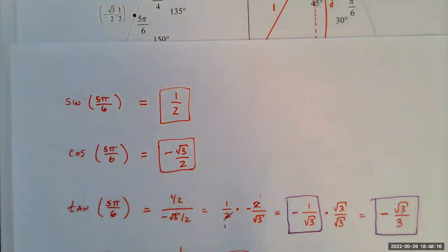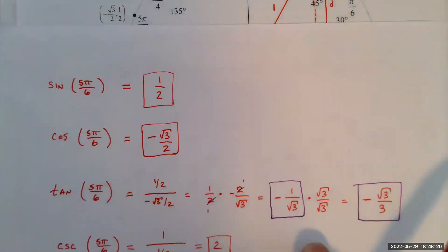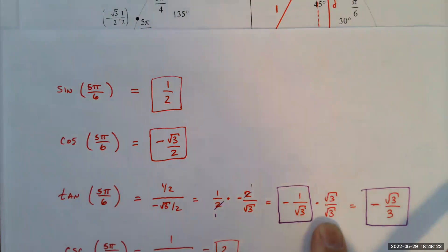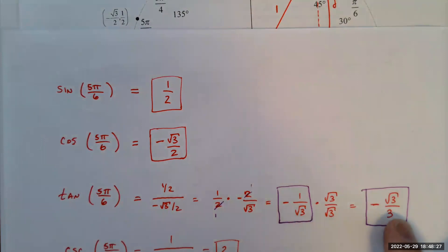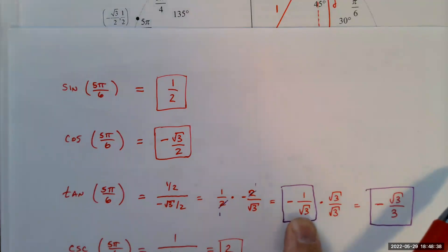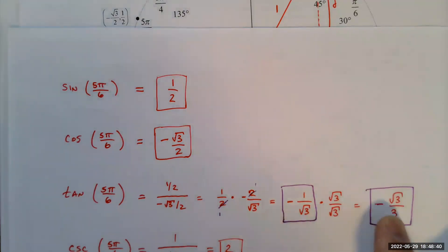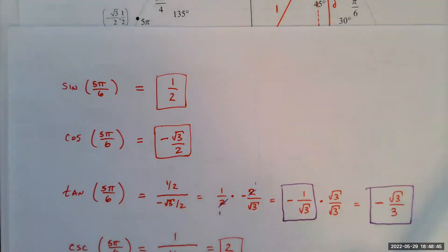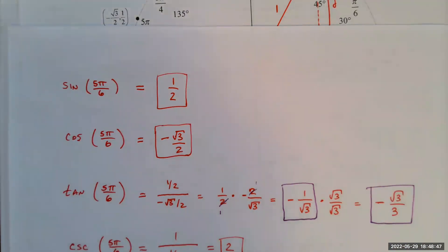A lot of times they want you to rationalize the denominator. Multiply numerator and denominator by √3, giving −√3/3. This is equivalent to negative 1/√3, but the rationalized form is sometimes more convenient for further calculations.